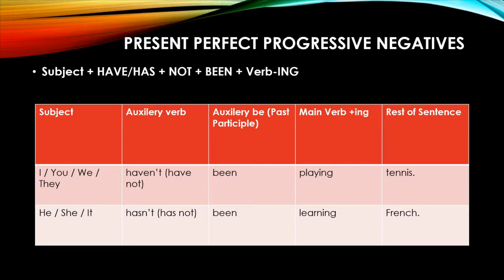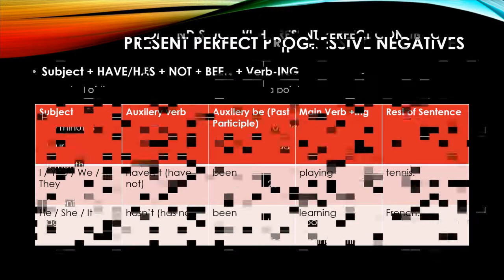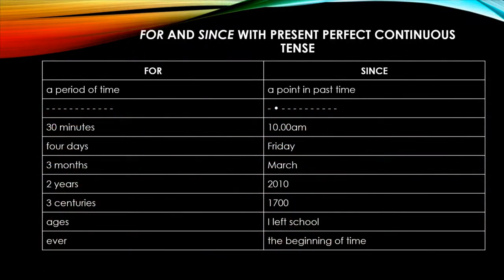Now we have for and since with present perfect continuous. As I said, this tense takes time as an important aspect. We are going to learn when to use for and when to use since. In the 'for' side, as you can see, some examples are given. You can see that in the 'for' side, these are a period of time, like 30 minutes, four days, three minutes, two years, three centuries, ages, ever. In the 'since' side, it is the point in the past time, an exact point where it started, like 10 a.m.